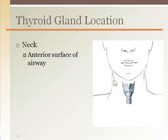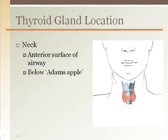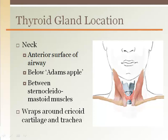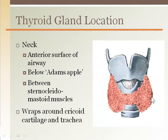The thyroid gland is located on the anterior surface of the neck. You can feel it just below the Adam's apple and between the sternocleidomastoid muscles. The muscles will obstruct your palpation if you don't stretch your neck upward. The thyroid gland is narrow across the anterior surface and enlarges on both sides as it wraps around the airway.